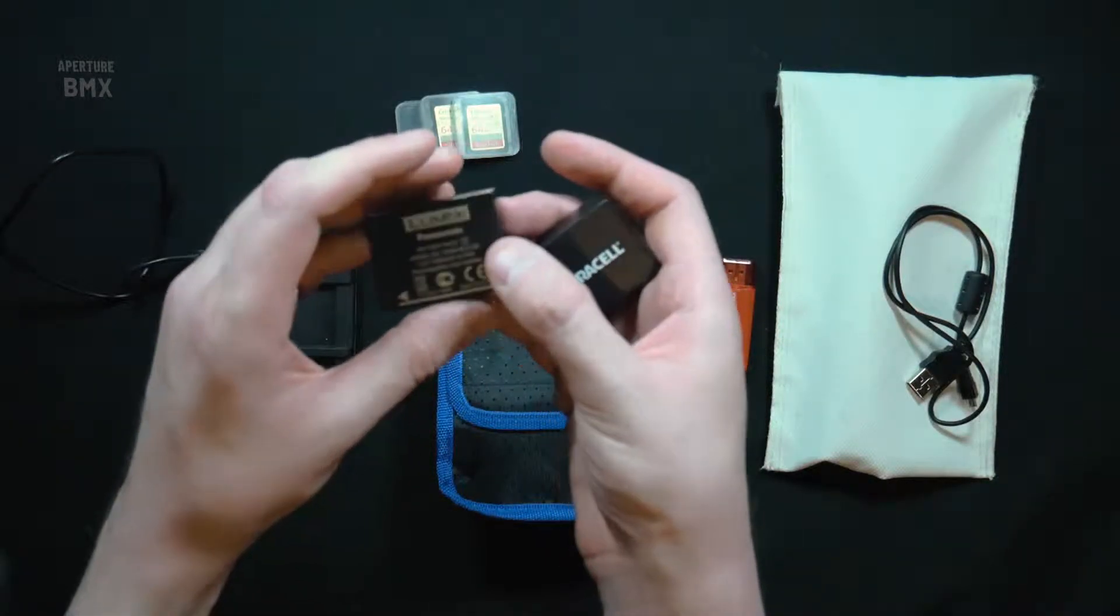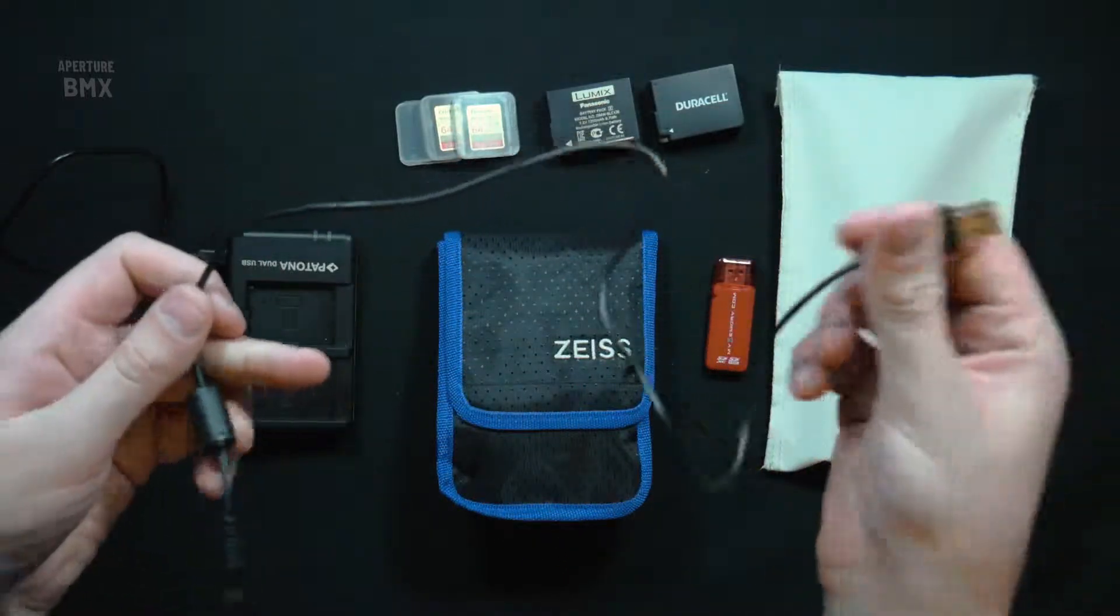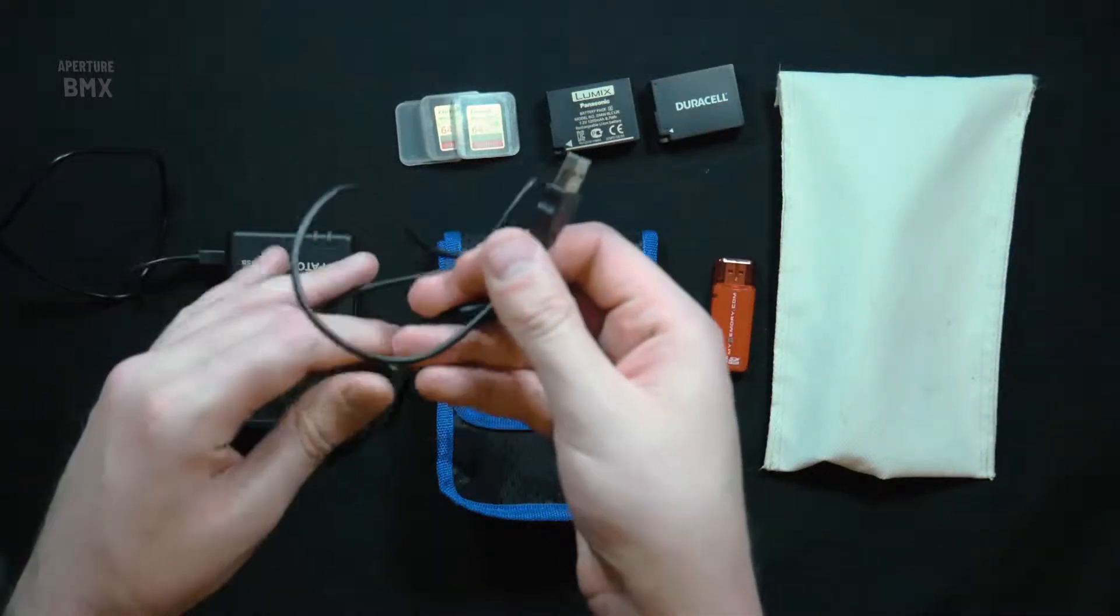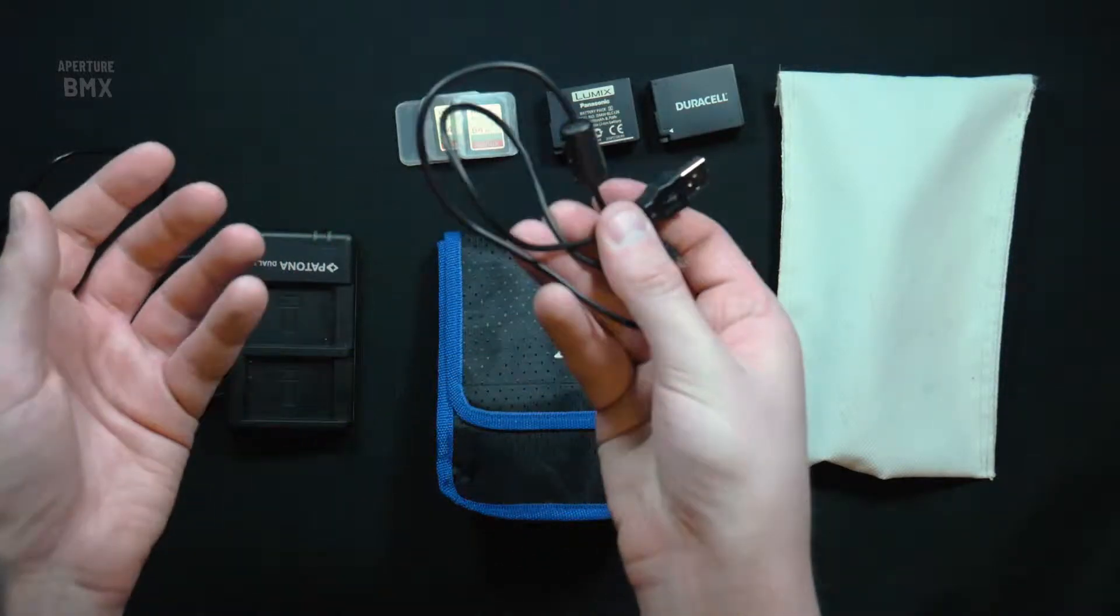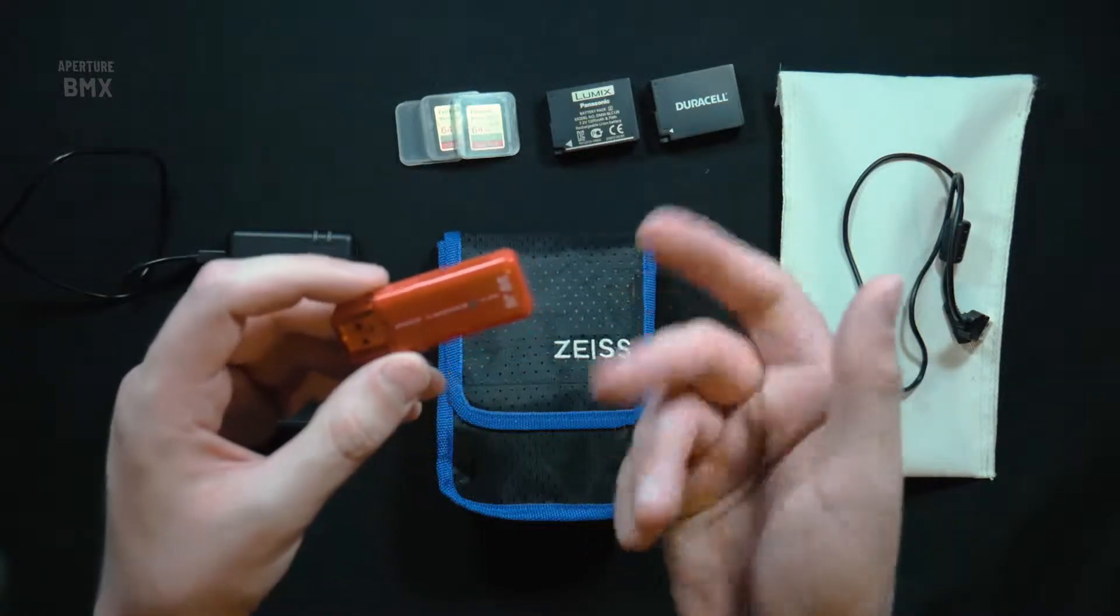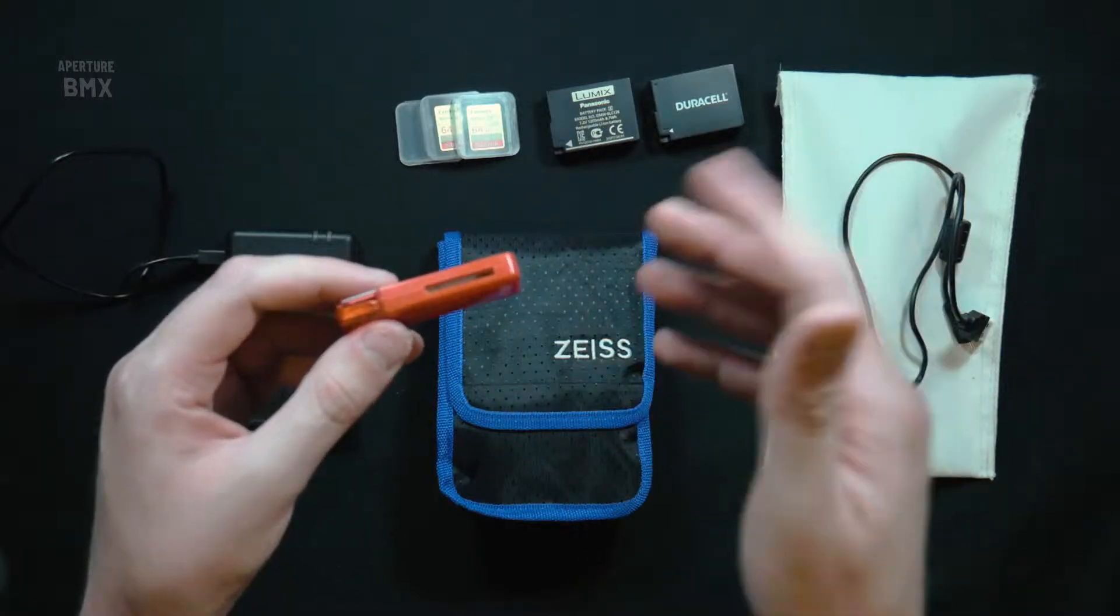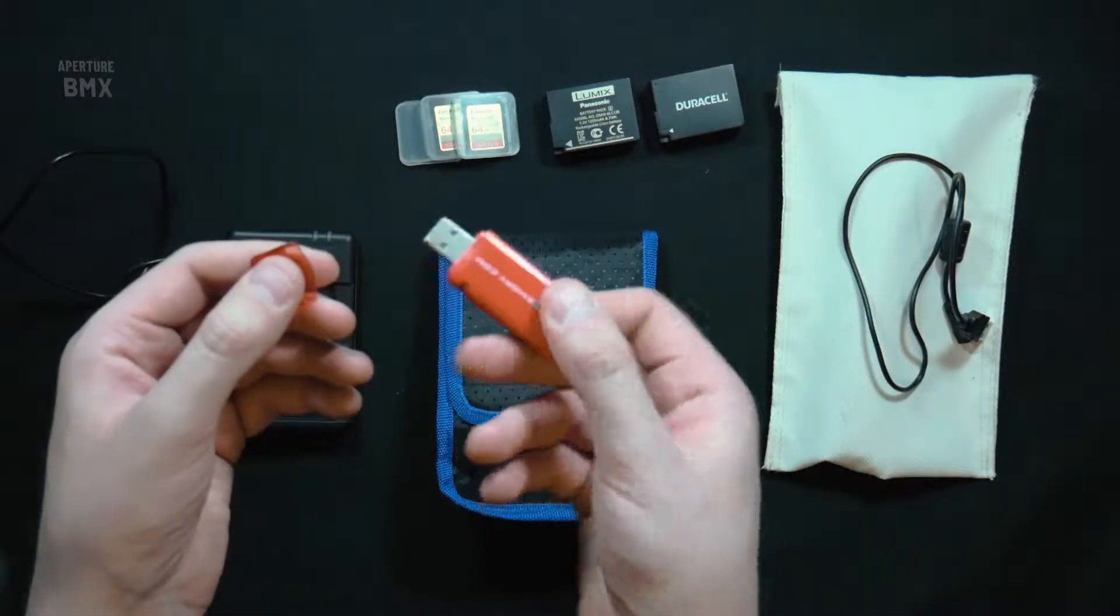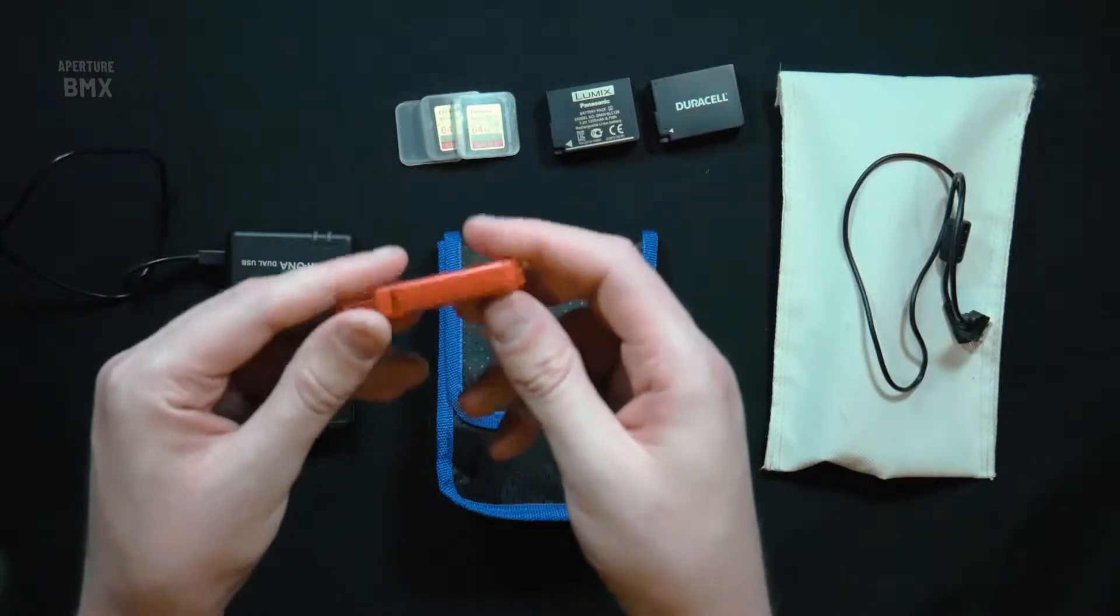I also have this cable, which is the cable you get with the camera to plug it into a computer or whatever if you need to transfer files. This is an SD card reader if I need to put an SD card into a computer that doesn't have an SD card reader slot. Plug it into USB, put an SD card in there, and you're sorted.